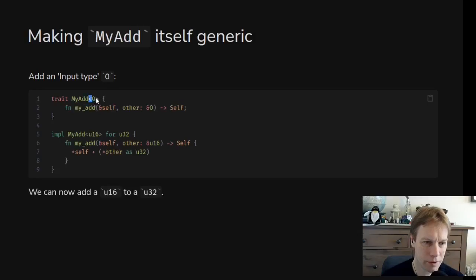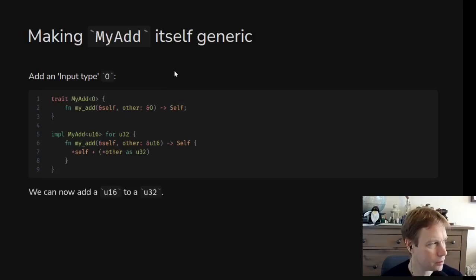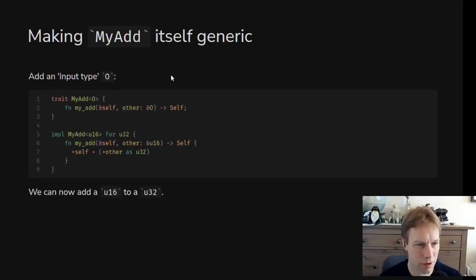When you talk about myAd you need to say what type the other type is, in order to explain what myAd means. myAd is a constraint on some types — a type either complies with myAd or doesn't — but now when you're talking about myAd you need to say: adding to what? Not just 'you can add these' but 'you can add them to what?' The definition of myAd is that you can add self to an other, where the other has type O.